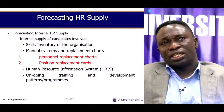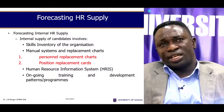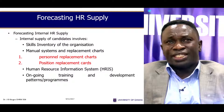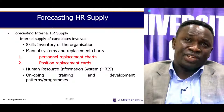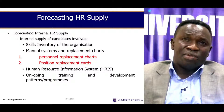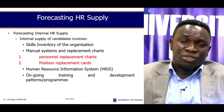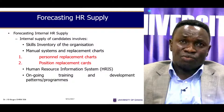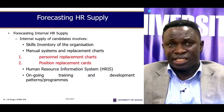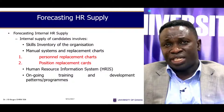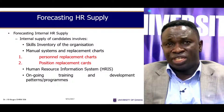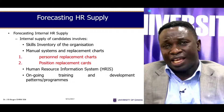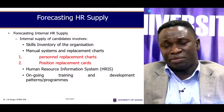Forecasting HR supply. In forecasting internal HR supply, we look at internal supply of the candidates involved. That includes the skills inventory of the organization, manual systems and replacement charts — which deal with two major things: personnel replacement charts and position replacement cards. All these things connect to what we call human resource information systems, and ongoing training and development programs that can help us determine these replacement charts.